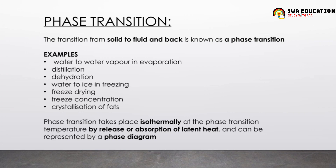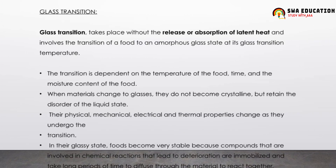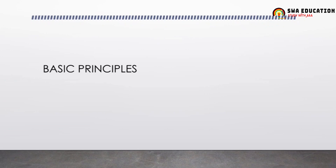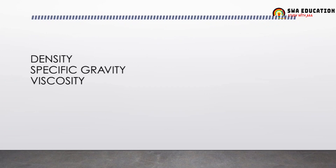Phase transition is also represented by a phase diagram. In glass transition, there is no release or absorption of latent heat. Glass transition is dependent on the temperature of the food, time, and moisture content of the food. So glass transition takes place without release or absorption of latent heat, whereas phase transition takes place with the release or absorption of latent heat.